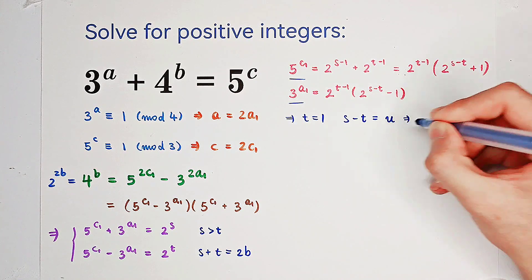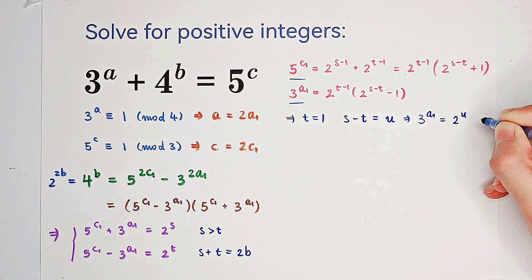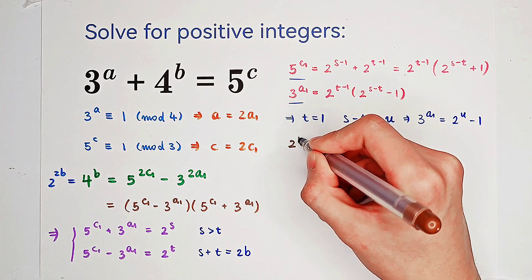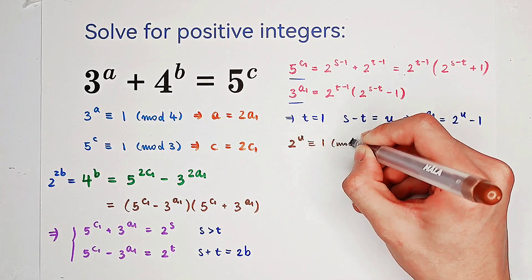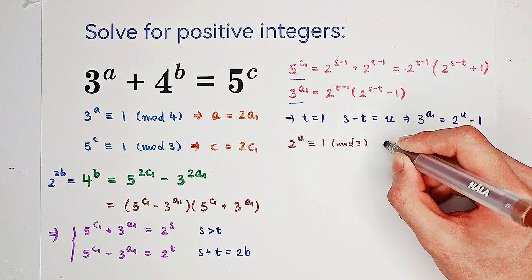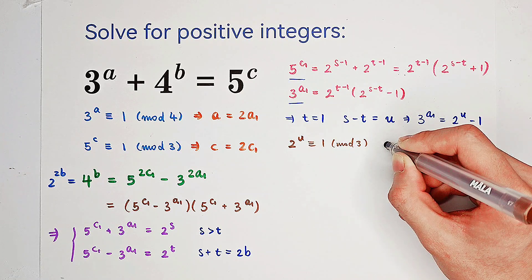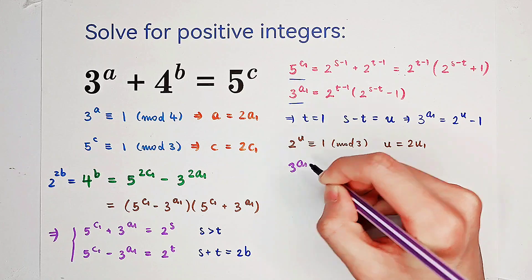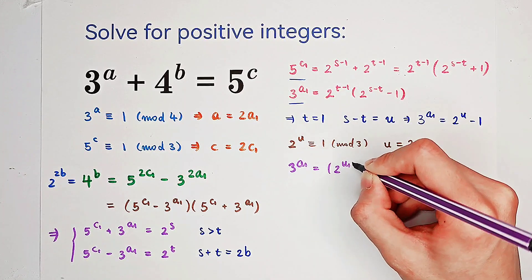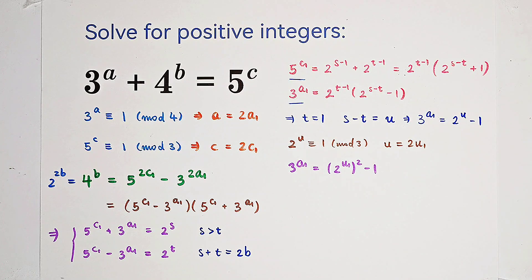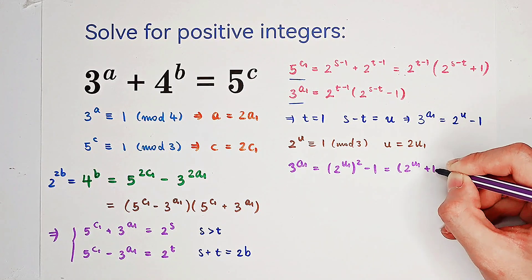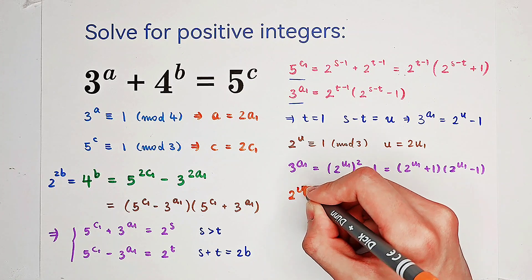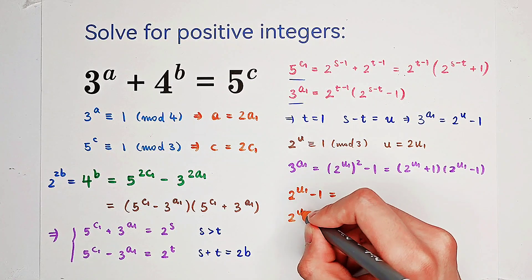With t equal to 1, we get 3 to the power of a1 equals 2 to the power of u minus 1. Looking at the residue mod 3, 2 to the power of u must be congruent to 1 mod 3, which happens if and only if u is even — so u equals 2u1. Thus 3 to the power of a1 equals (2 to the power of u1) squared minus 1, which factors as (2 to the power of u1 plus 1) times (2 to the power of u1 minus 1).